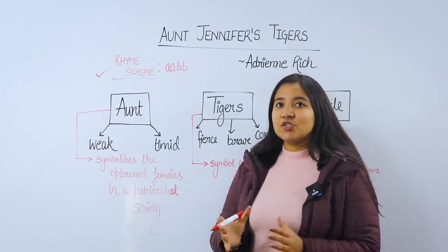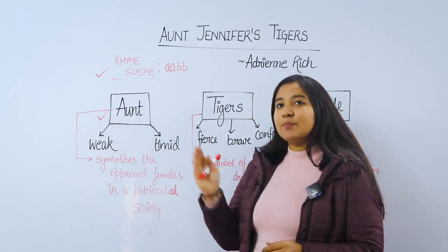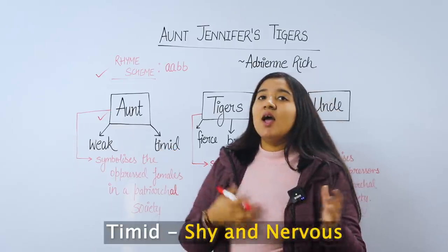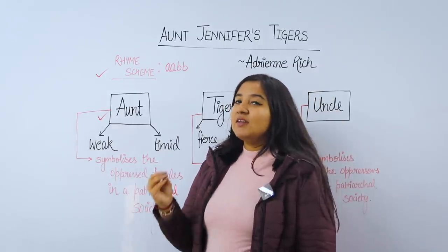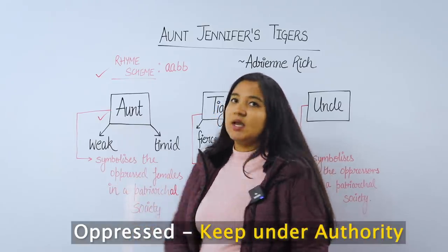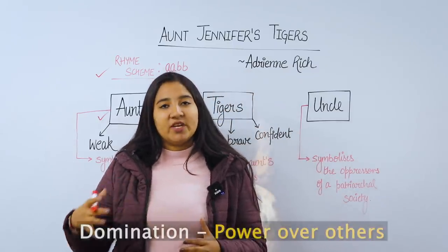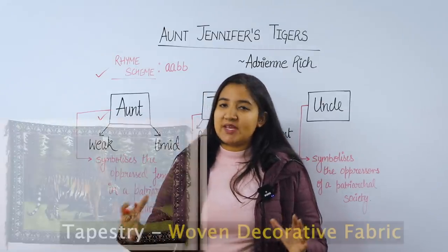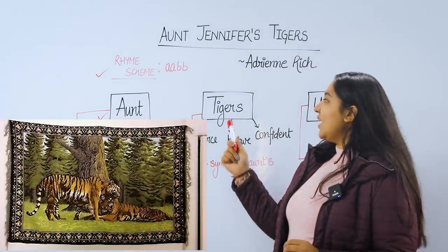Our protagonist is introduced in the title, which is Aunt Jennifer. Aunt Jennifer's personal characteristic is that she is a very weak, timid, and not very confident lady. Aunt Jennifer represents the oppressed females in a patriarchal society, where there is male domination. The poem starts with Aunt Jennifer weaving a tapestry, in which she is weaving tigers.